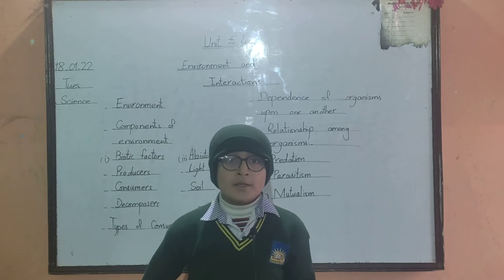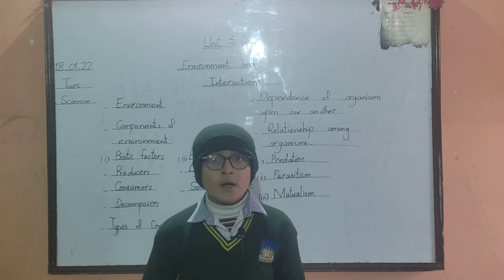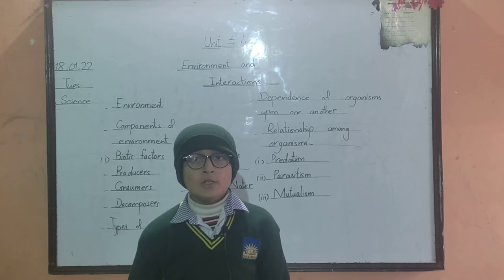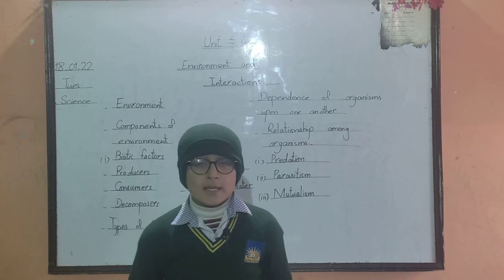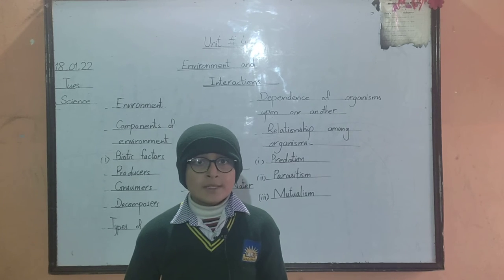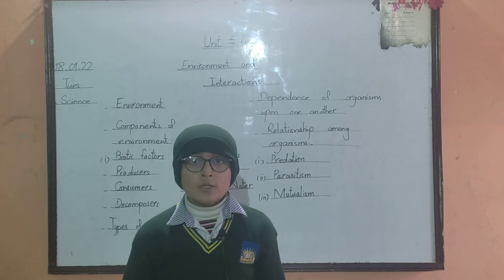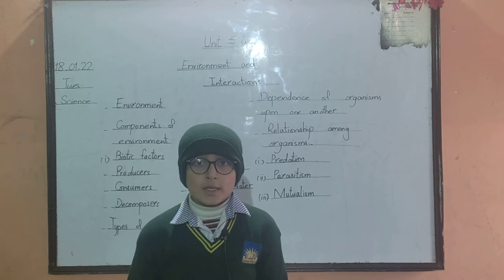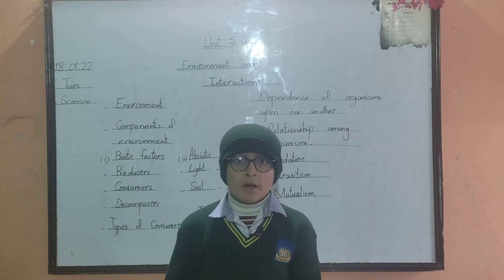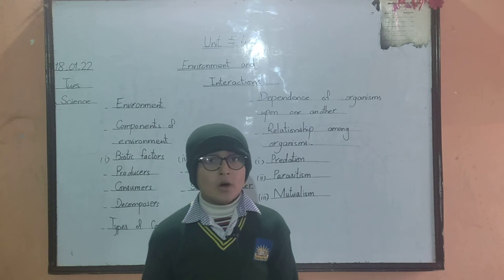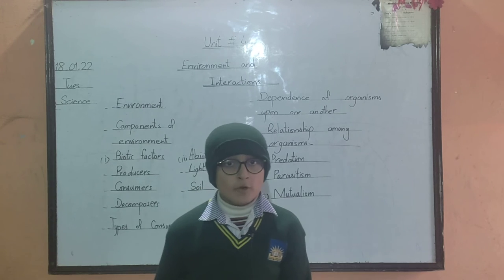Consumers can be of three types: herbivore, carnivore, and omnivore. Carnivores are the ones who eat only meat. Omnivores eat both, such as humans.